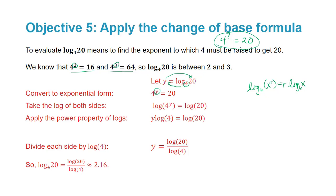So we can take the log, that is a common log of each side, because we know how to use the calculator for common log. If we take the common log of each side, the power property says this is equivalent to y times log 4 equals log of 20.